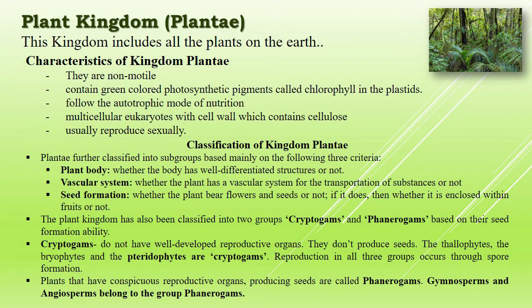Along with cellulose, other substances like pectin may be present. Sex organs are multicellular and jacketed. Various scientists proposed various types of classification on the basis of various characteristic features. Earlier, fungi and the members of Monera and Protista having cell walls were put under the kingdom Plantae, but now they have been excluded from the kingdom.